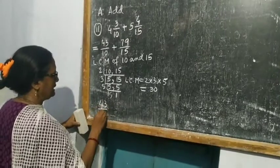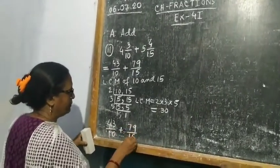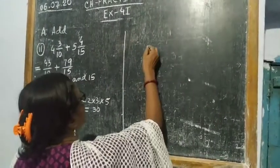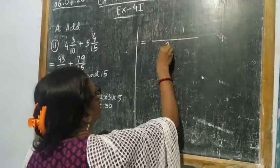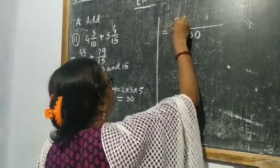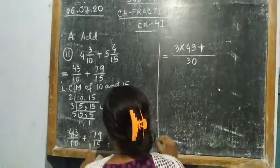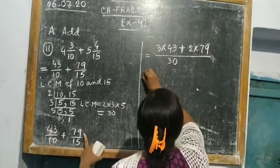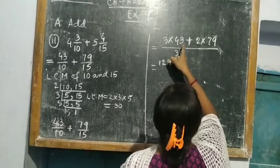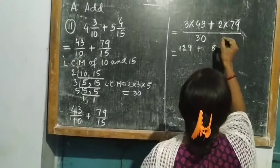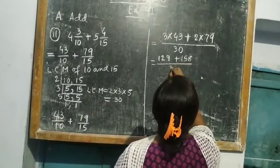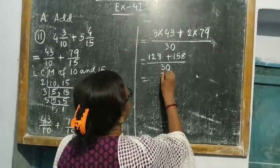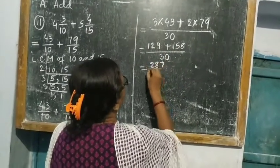Now children, you write 43 by 10 plus 79 by 15. The LCM of 10 and 15 is 30, so in the denominator you write 30. Now 30 divided by 10 is 3, so 3 into 43 in the numerator, plus 30 divided by 15 is 2, and 79 in the numerator. So 3 into 43 is 129, plus 2 into 79 is 158. Now add 129 and 158: 9 plus 8 is 17, carry 1; 2 plus 5 plus 6 is 8; 1 plus 1 is 2. So 287 by 30.